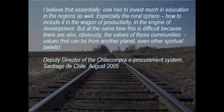All of these policies were effectively writ into technology. The deputy director goes on to say: 'There are these rural areas. I believe essentially one has to invest much more in education in the regions as well, especially the rural sphere — how to include them in the wagon of productivity, in the engine of development. But this is difficult because there are also the values of these communities, values that can be from another planet, even other spiritual beliefs.' This is a story of development on a single track, where the aim is getting people onto the wagon traveling in the same direction — strikingly different from the radical pluralism that Sen uses in his thinking about development.